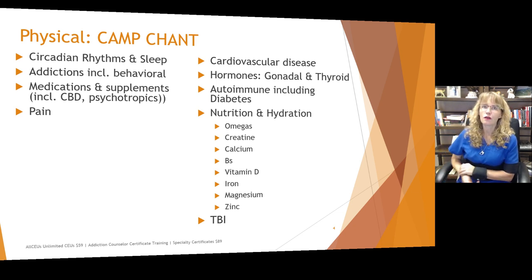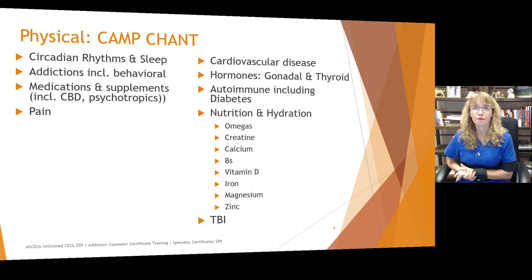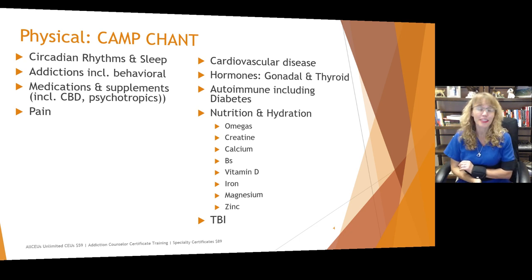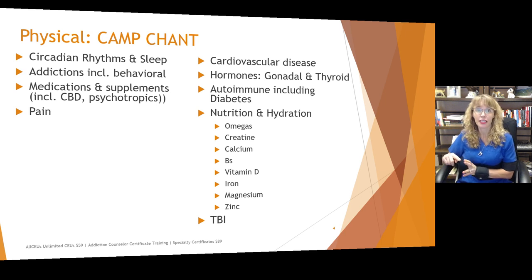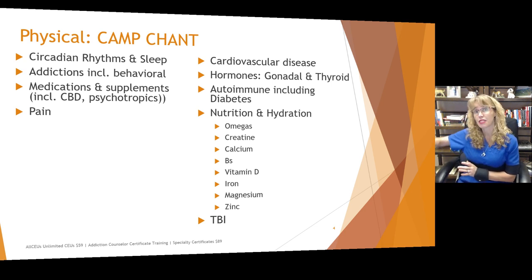Traumatic brain injury — a concussion often is not a huge deal, but sometimes it can be. Multiple concussions and blast concussions can have a progressive effect, and some people can develop traumatic encephalopathy years after multiple traumatic brain injuries — we see this in boxers and football players. It is important to assess if somebody was in a situation, like in the military or a contact sport, where they were repeatedly getting their bell rung. TBI can contribute to mood symptoms and erratic behavior even many, many years later.